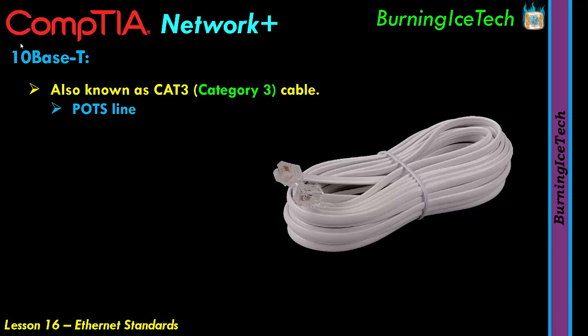10BaseT could also run over a CAT5 cable — category 5 — which is a normal LAN cable you'd plug into your desktop or laptop. This was possible in the 90s, and that's pretty much the only time we used it. But whether you use CAT3 or CAT5 cable, either way it limits you to a 10 megabits per second speed limit.